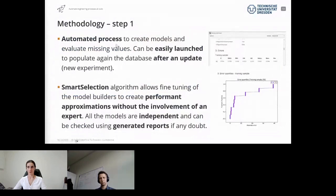This first step is an automated process to create the models and evaluate the missing values. You just have to press play at the beginning of the workflow, and it will treat the existing values, build the model, build the prediction, and send you back the full CSV with all the values. It can be easily launched to populate again a database after an update. Imagine that Johannes has access to a new experiment, new data—he just has to add this experiment to already existing CSV files, launch again the workflow, and everything will be updated. Because he will have more information, the error and the accuracy estimation of the model is expected to be improved.